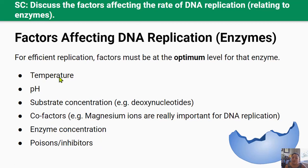Temperature: all enzymes have an optimum temperature. At very low temperatures enzyme action slows, and at high temperatures the 3D shape of the enzyme might change and denature. Denaturation is irreversible, meaning the enzyme is inactive. pH: all enzymes have an optimum pH range, and outside of this optimum range can cause an enzyme's active site to denature, preventing the substrates from binding. Remember that pH affects hydrogen bonds.